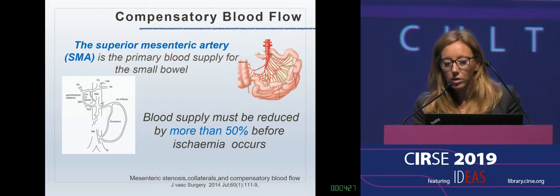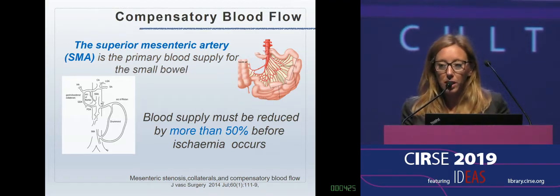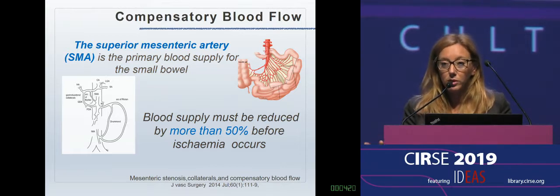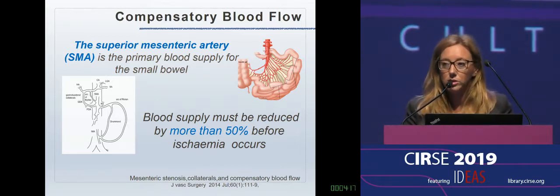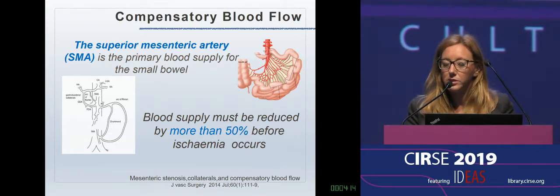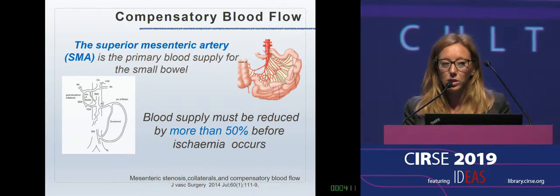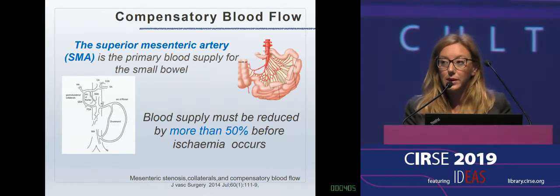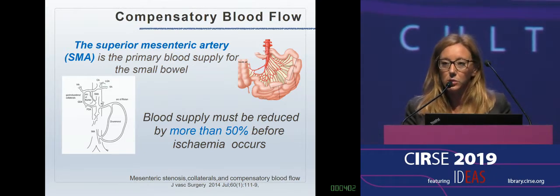The superior mesenteric artery is the primary blood supply for the small bowel. Because of the configuration of the vessel and the relatively low oxygen extraction, the intestine is able to compensate about 75% of blood reduction up to 12 hours. So the blood supply must be reduced more than 50% before ischemia occurs, meaning that in the early stage of the disease, we don't have specific clinical signs.